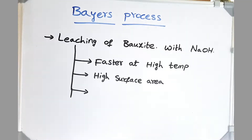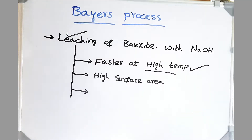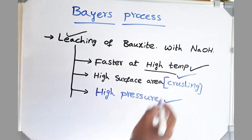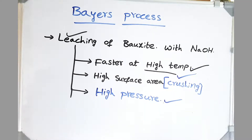We can speed up leaching by increasing the temperature — higher the temperature, faster is our leaching process. High surface area also helps: if the surface area of our ore bauxite is high, it dissolves quickly in the solvent NaOH. So we crush our ore before leaching in Bayer's process. We also require high pressure because at higher temperatures — greater than the boiling point of water — we want water to stay in liquid state. By increasing pressure, we increase the boiling point of water.